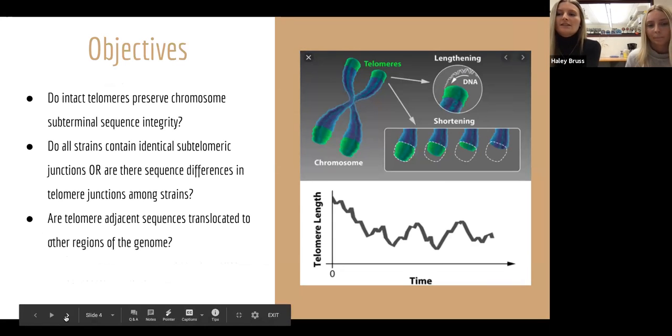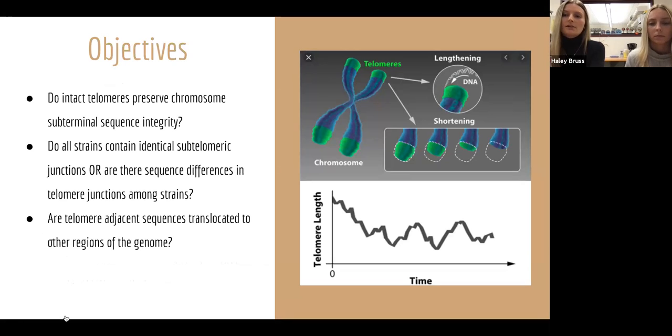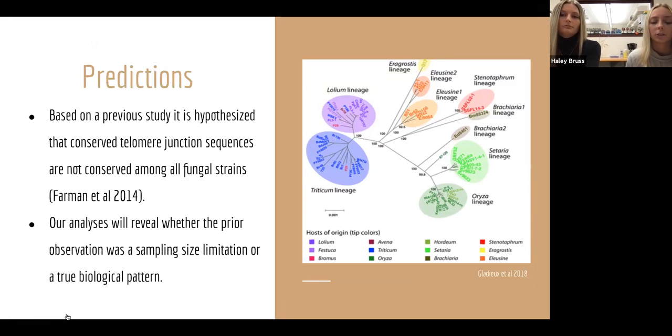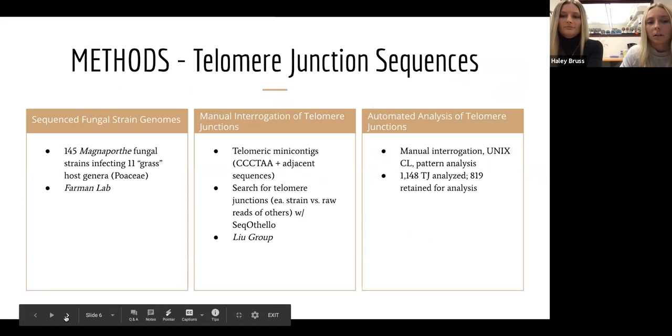So our objectives in this investigation was to essentially determine if telomeres did their jobs and preserve the ends of the chromosomes. Our second objective was to determine if the telomere junction sequences were the same in each strain or if they were just randomly generated. And our last objective was to determine if the telomere-adjacent sequences were able to translate or translocate from the ends of the chromosomes to somewhere within the interior region. A previous analysis of Magnaporthe revealed that the sequences immediately adjacent to the telomeres of one strain were frequently absent from other strains of the fungus. And if they were present, they were not located at the telomeres. So we hypothesized that conserved telomere junction sequences are not conserved among all fungal strains. And our analysis will ultimately reveal if the prior observations were a sampling size limitation or ultimately a true biological phenomenon.